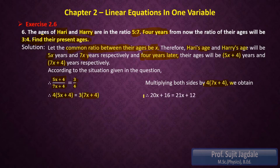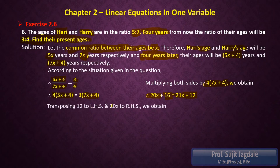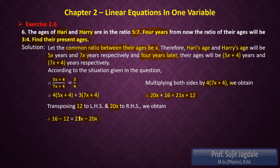After simplifying we get 20x plus 16 equals 21x plus 12. After transposing 12 to the LHS and 20x to the RHS — since they are the lower values — the signs will change. We get 16 minus 12 equals 21x minus 20x, which simplifies to 4 equals x.